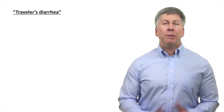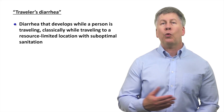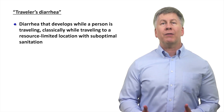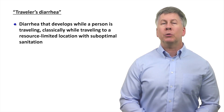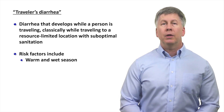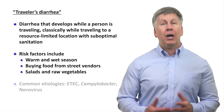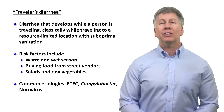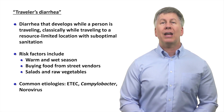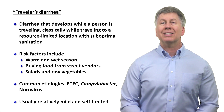There is one particular form of acute diarrhea worth mentioning separately: traveler's diarrhea. As the name implies, this is diarrhea that develops while a person is traveling out of the geographic area in which they normally reside, classically involving travel to a resource-limited location with suboptimal sanitation. Risk factors include travel during the warm and wet season, buying food from street vendors, and consuming salads and raw vegetables. Common etiologies include enterotoxic E. coli, Campylobacter, and norovirus. Although it's very common, luckily it is usually relatively mild and self-limited.